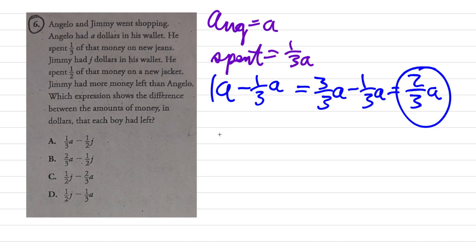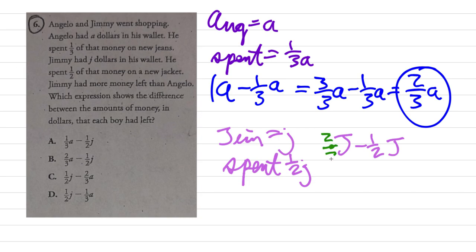We're going to do the same thing with Jimmy. Jimmy is going to be j. He spent half, so we've got to subtract that half of j. So basically the Jimmy situation is going to be j minus one-half j. Now if you want to get a common denominator, you have to multiply j by two over two. That's 2j over 2 minus 1j over 2.